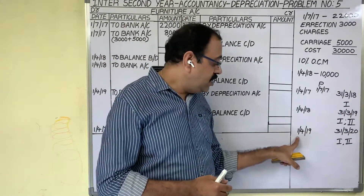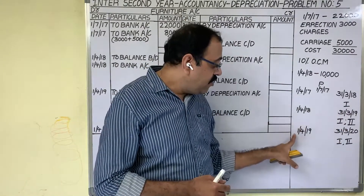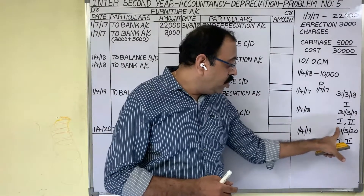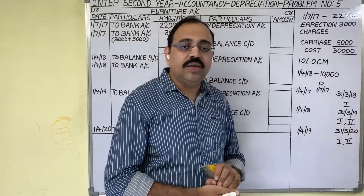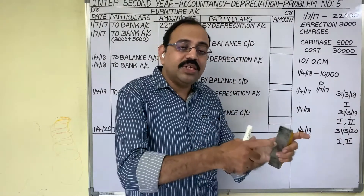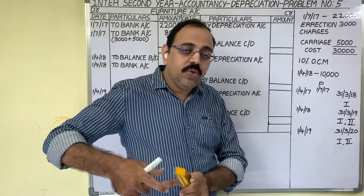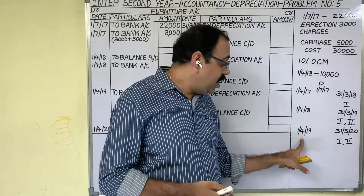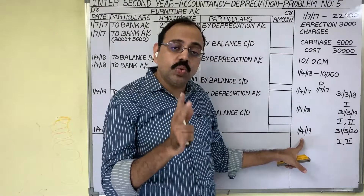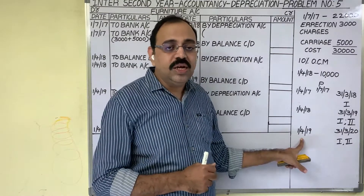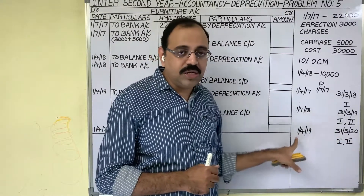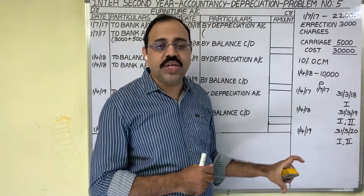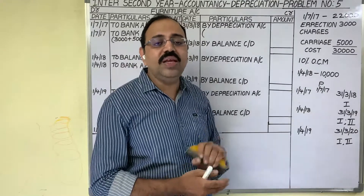Come to the third year. Third year dates are 1st April 2019 to 31st March 2020. The same assets are continuing in the third year also. In the third year, the firm uses these two assets for 12 months. So he is asking us to show the furniture account for three years.